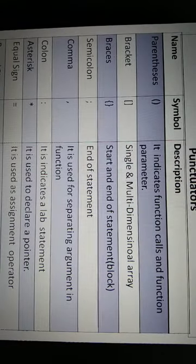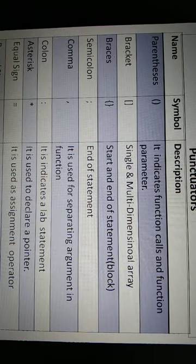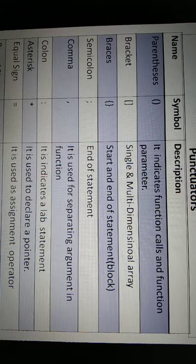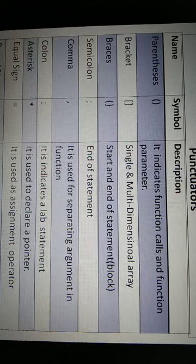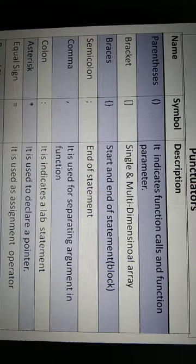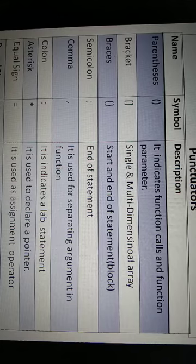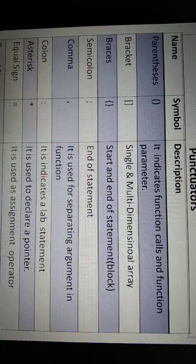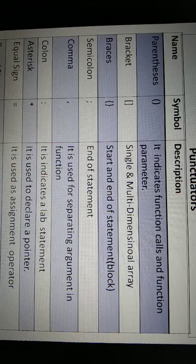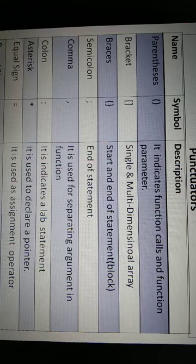We use some punctuators in C++ language, which is important to know before learning C++ programming. Simple bracket or parenthesis indicates the function call and function parameter. We use this for function calling and parameter passing. Small bracket is used for single and multi-dimensional array. When we declare an array, we use this bracket to give array values.